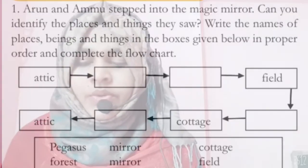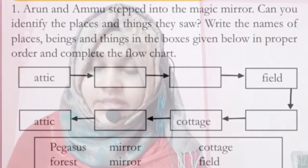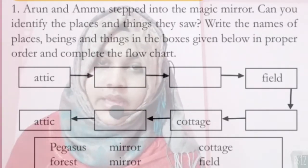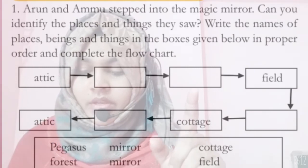This is the story of Arun and Ammu. Did you enjoy it? Look at page number 18. There you can see one activity, a very simple one. Let me read the question for you. Arun and Ammu stepped into the magic mirror. Can you identify the places and things they saw? Write the names of places and things in the boxes given below in proper order and complete the flow chart.